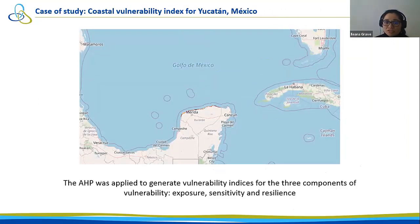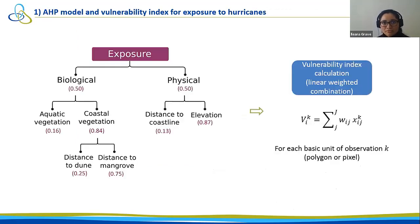The AHP was applied to generate vulnerability index for three components of vulnerability, such as exposure, sensitivity and resilience. In particular, we are focusing here the presentation on the exposure index. The exposure AHP was obtained in different workshops with biophysical experts on exposure to hurricanes.